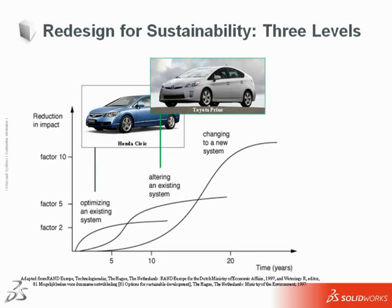Level 2, altering an existing system, is like a car that has been fundamentally altered but still operates within the existing product system. For example, the Prius is a hybrid of two different power sources and has an altered drivetrain, transmission, and braking system, but it still operates within the product infrastructure of roads and gas stations.